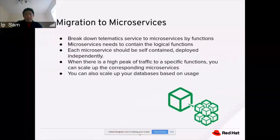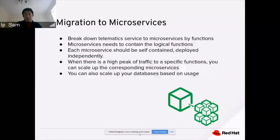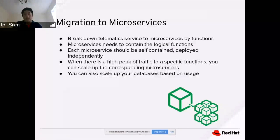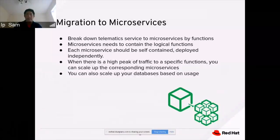The migration to microservices is the idea of breaking down telematic services into microservices by function. Microservices contain logical blocks of function — each service is self-contained, self-deployed, and works independently. For example, we may have a location service that deals with the location data endpoint. It's a standalone small microservice. When there is a high peak going into this specific service, it will automatically scale up by OpenShift, and it would also scale your databases based on usage.